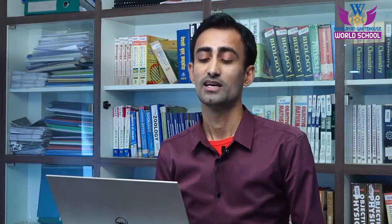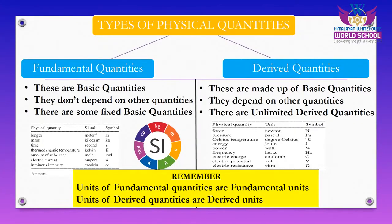If one of the alphabets is missed or changed, the whole word changes. In this way, fundamental quantities play a very vital role in physical quantities. They are also fixed in number — not in very large number — just like in the English language there are 26 fixed alphabets, we also have a fixed number of fundamental quantities.